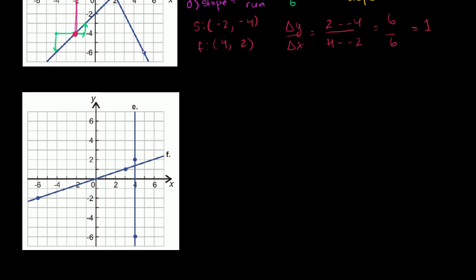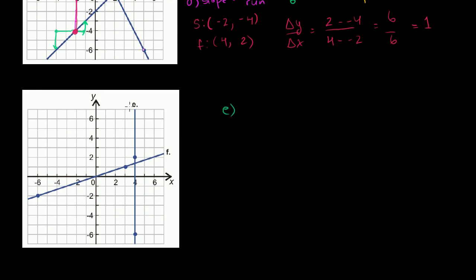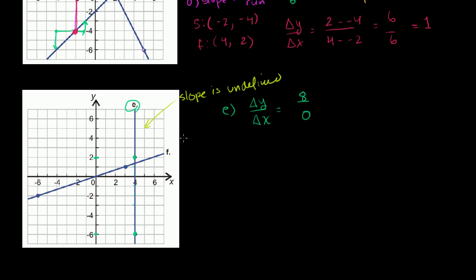Let's do line E. Change in y over change in x: our change in y going from this point to this point is 8 — you can take 2 minus negative 6. But the x value here is 4, and the x value there is 4. x does not change, so it's 8 over 0, which is undefined. So in this situation, the slope is undefined. When you have a vertical line, you say the slope is undefined because you're dividing by 0. That tells you you're dealing with a vertical line.